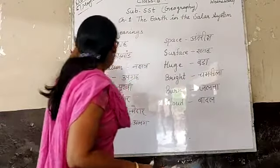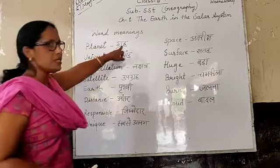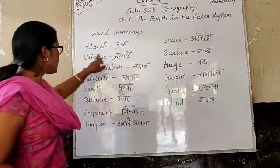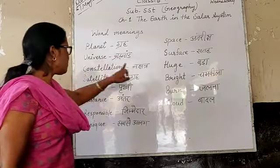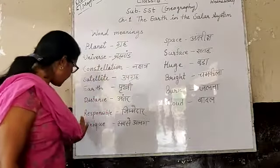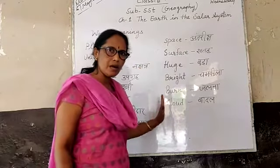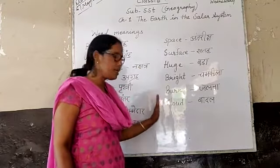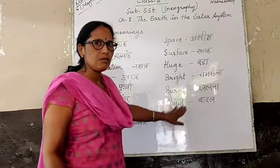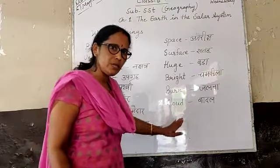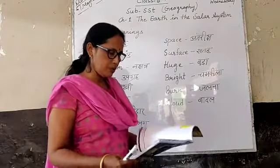And these are the word meanings — you can see this. Planet means Dreh. Universe means Raman. Constellation means Naqshad. I have written all the word meanings. If you don't understand it, then you can read it. If it doesn't make sense, you can ask me and I will tell you again.